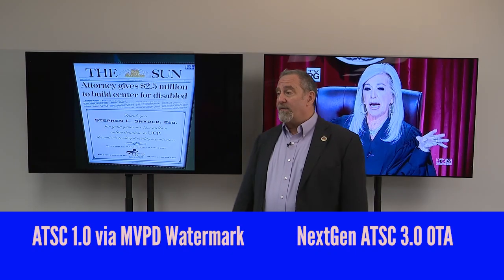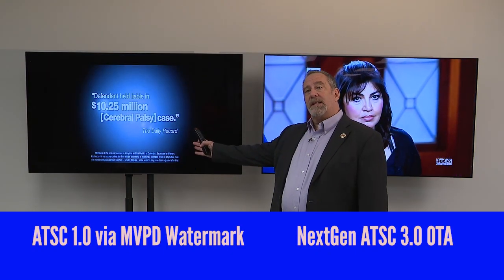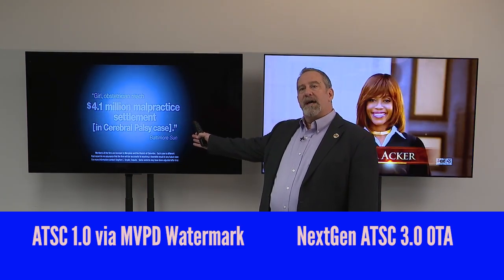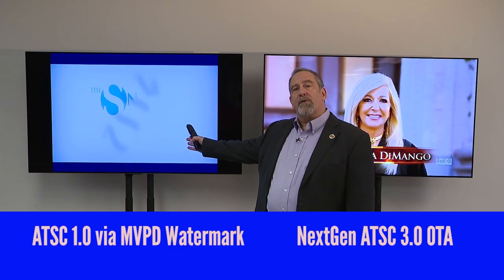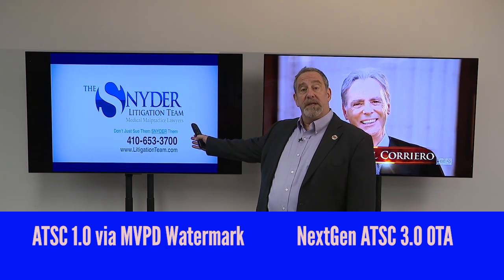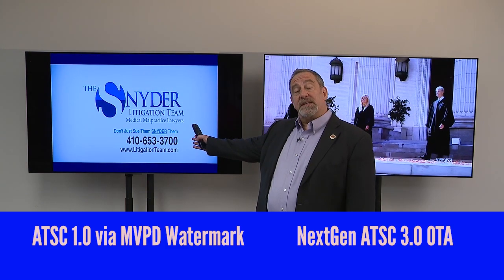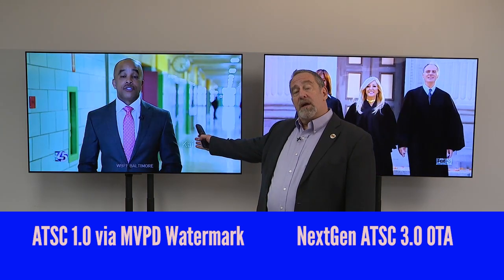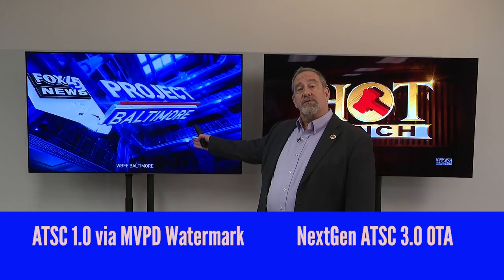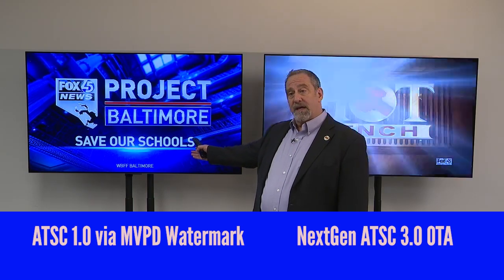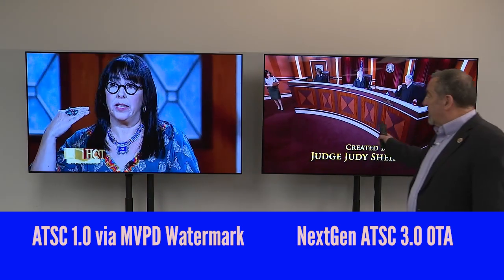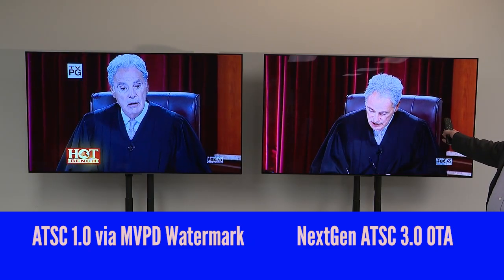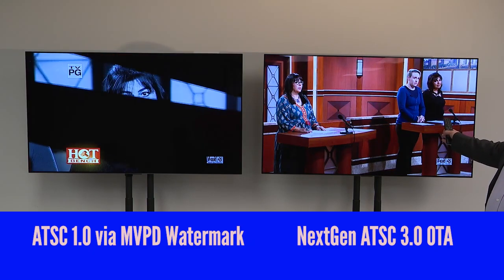What we have here are two displays. The display on the left is receiving an existing television broadcast signal being fed through a multi-program video distributor, MVPD — in this case a cable company. It's received off the air and delivered to a set-top box through the HDMI input on the back of the television. The television on the right is receiving an off-the-air signal in the new next-gen ATSC 3.0 broadcast signal.